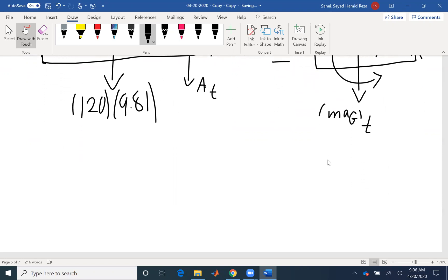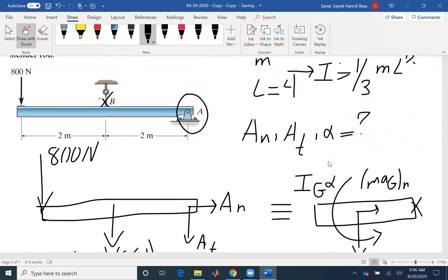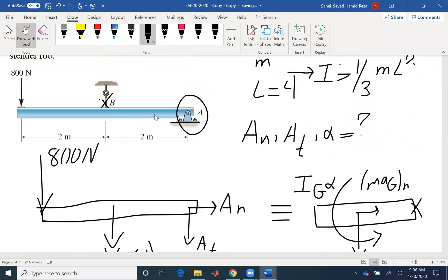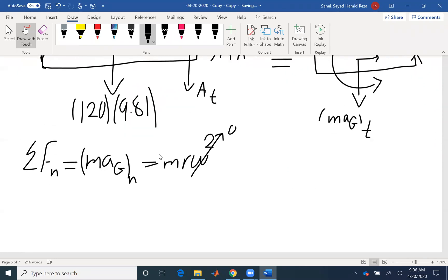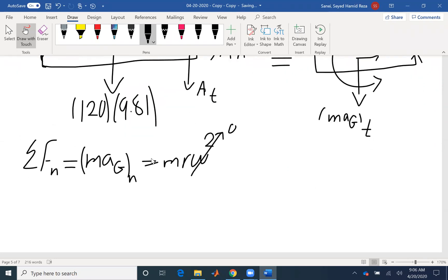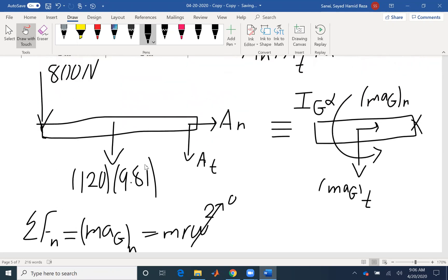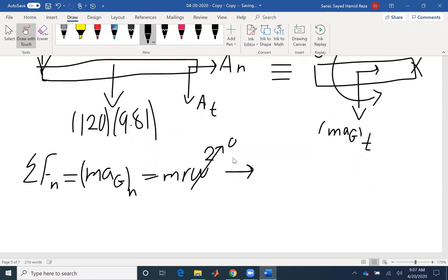I have three equations that I can write. Summation of forces in the normal direction would be M A_G_N or M R omega squared. Omega would be zero at the initial instant because when rope B fails at the very instant, there would be no omega. Here I have summation of forces equals zero. That's like a static problem. And the only force that I have in N direction is A_N. Here immediately, I can conclude A_N would be zero.